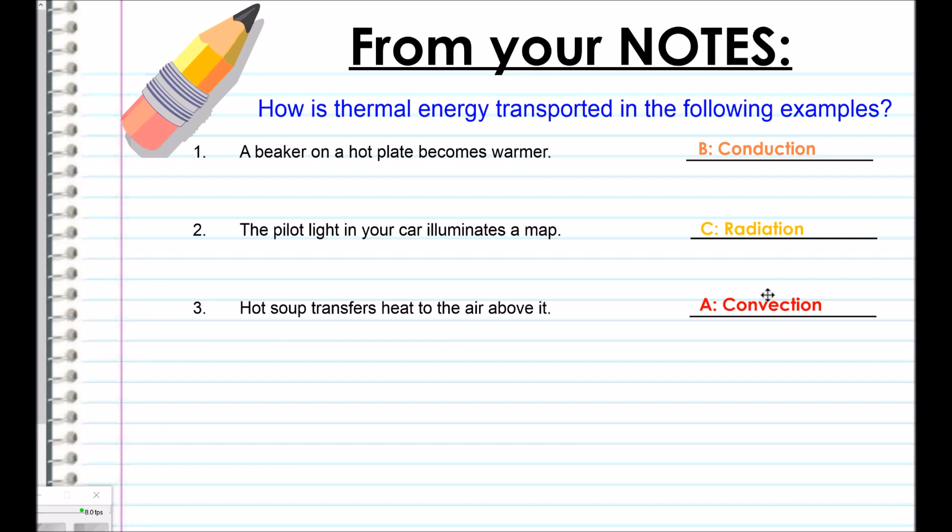Welcome back. A beaker on a hot plate becomes warmer. This is conduction because the beaker is actually touching the hot plate. Remember, it has to be touching to be conduction. The pilot light in your car illuminates a map. Radiation. Like I said, anytime we talk about light, think radiation. And then hot soup transfers heat to the air above it. This is convection because it's happening in a fluid. It's moving from a liquid into a gas.